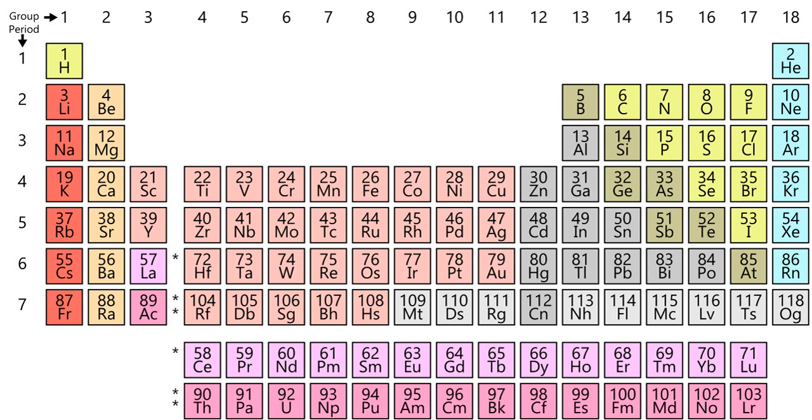Currently, IUPAC defines an element to exist if it has isotopes with a lifetime longer than the 10^-14 seconds it takes the nucleus to form an electronic cloud. By 1914, 72 elements were known, all naturally occurring. The remaining naturally occurring elements were discovered or isolated in subsequent decades, and various additional elements have also been produced synthetically, with much of that work pioneered by Glenn T. Seaborg.